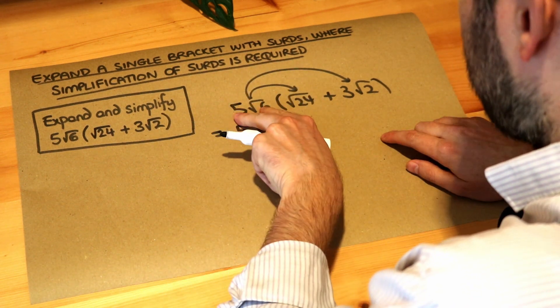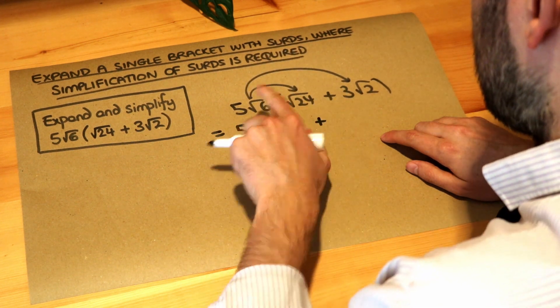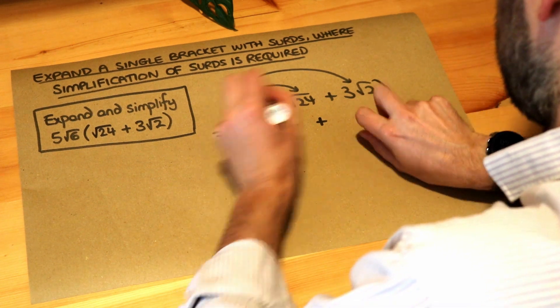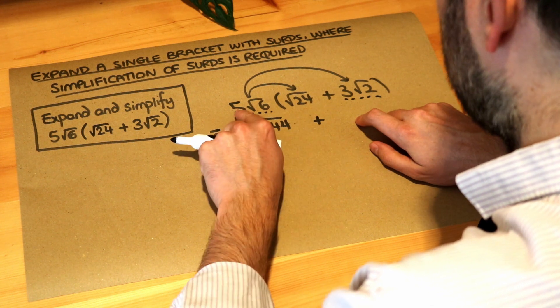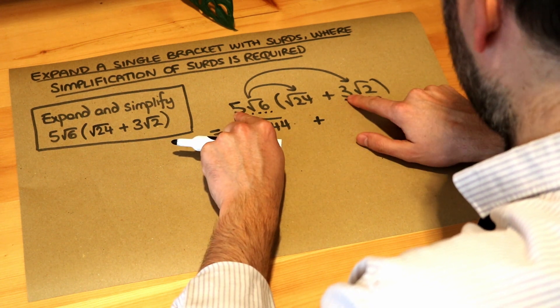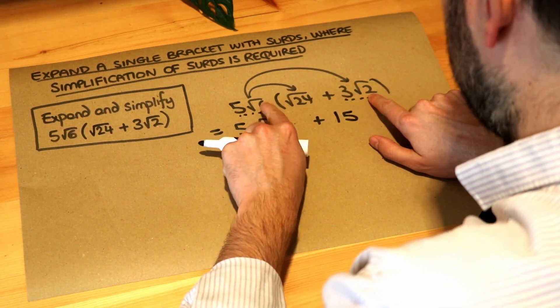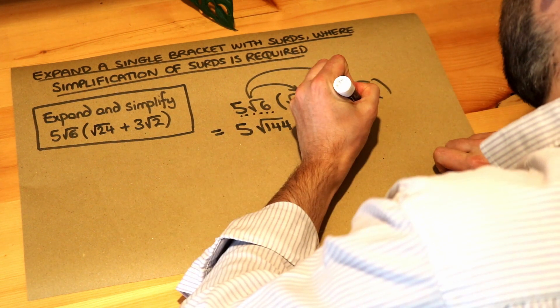We've done 5 root 6 multiplied by root 24, then we've got the plus, and now we've got 5 root 6 times by 3 root 2. We first multiply the non-surds, so we've got the 5 times the 3, which is 15. Then we times the surds together, so root 6 times root 2, 6 times 2 is 12, so it's root 12.